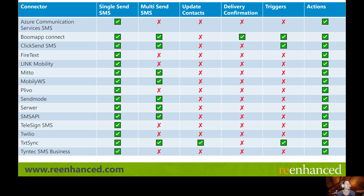If one of your must-haves is the ability to automate multi send of more than one SMS at a time, that just cut your list in half. The ones that do have multi send are BoomApp, ClickSend, Mido, MobilityWS, SendMode, Server, SMS API, and TechSync. Going into this, I heard of Twilio more than any of these — it had the name recognition. But skipping down to the third-to-last line, that's Twilio, and I really thought it would be the clear winner. Surprisingly, it's not — Twilio is one of the lightest players here, with the least offerings of anything.